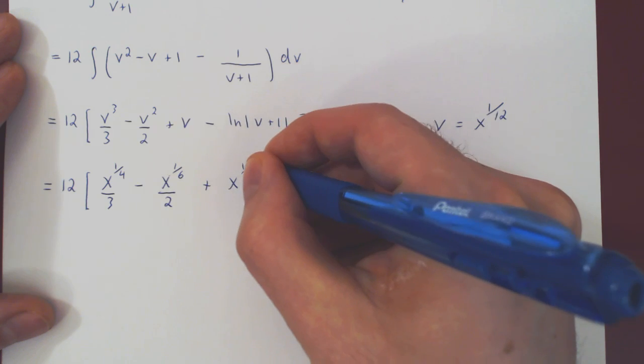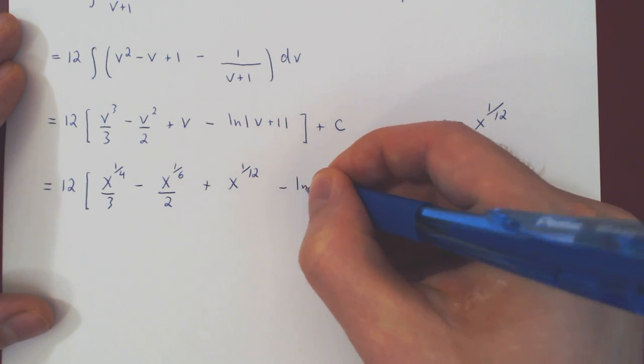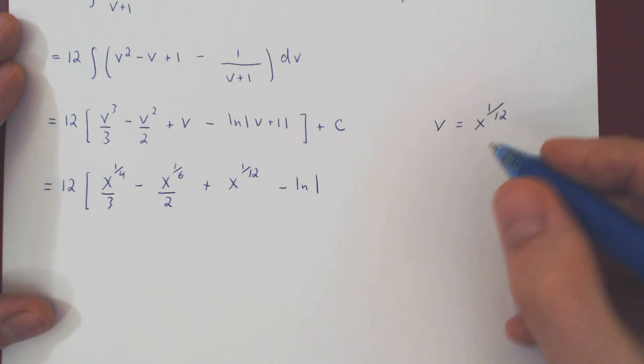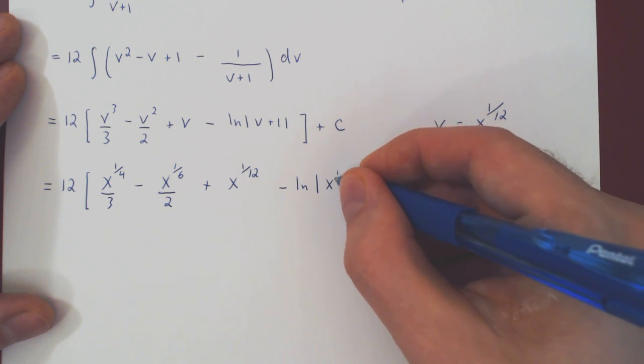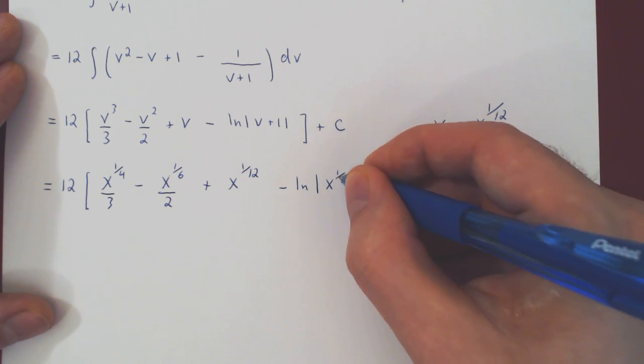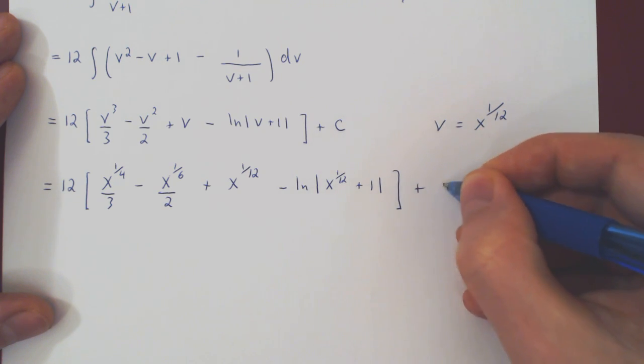Minus the ln of v plus 1, x to the 1 over 12, and of course plus c.